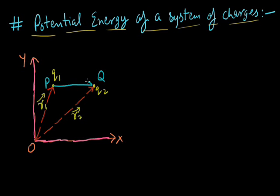This point is known as P, another is Q. A vector connecting both P and Q will be known as R12 vector. We have to find out the potential energy of this system of charges.